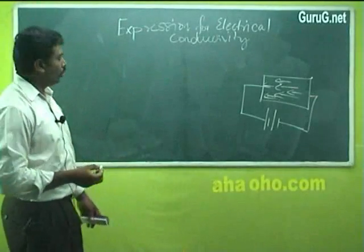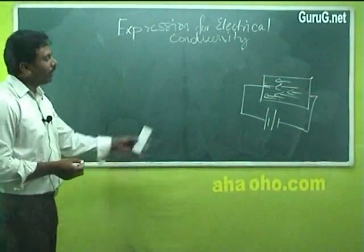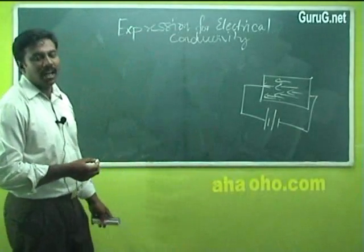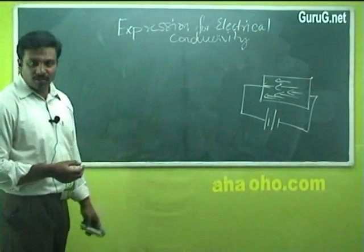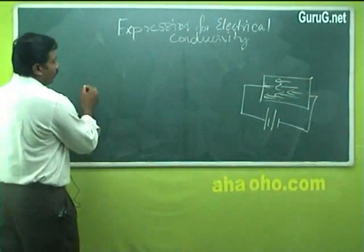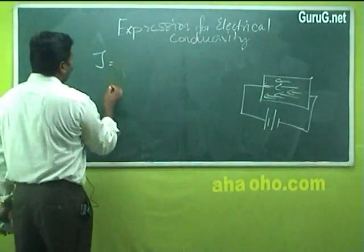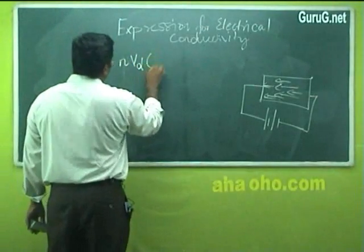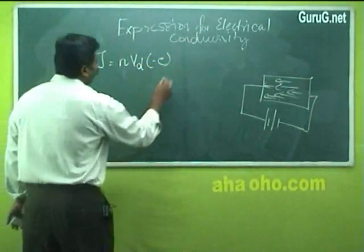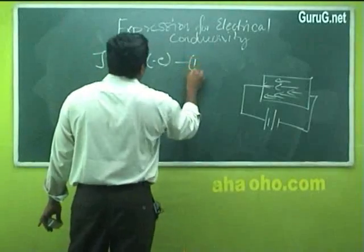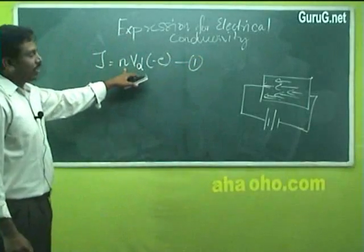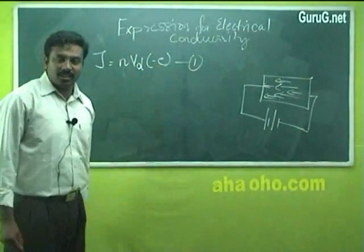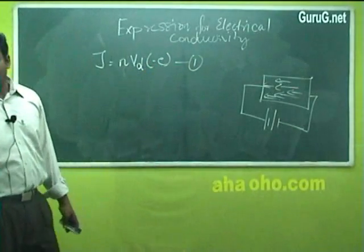To derive an expression, let N be the total number of electrons present inside the specimen and e is the charge of the electron. The current density J is equal to N into VD into minus e — put this as equation 1 — where N is the total number of charges inside the specimen, VD is the drift velocity, and e is the charge of the electron.